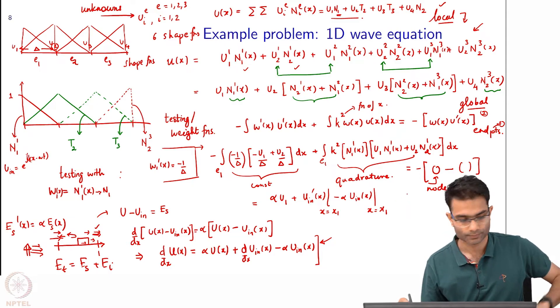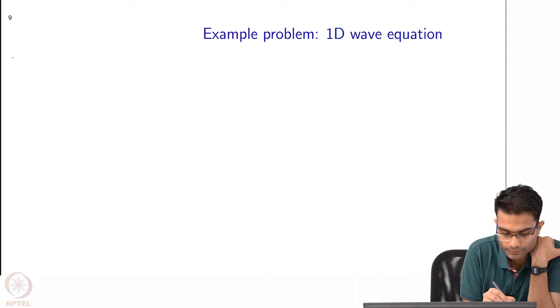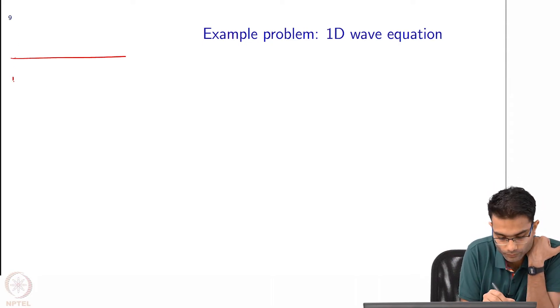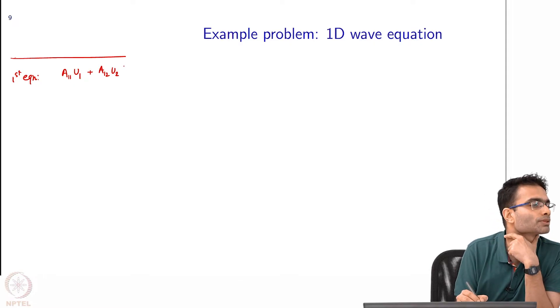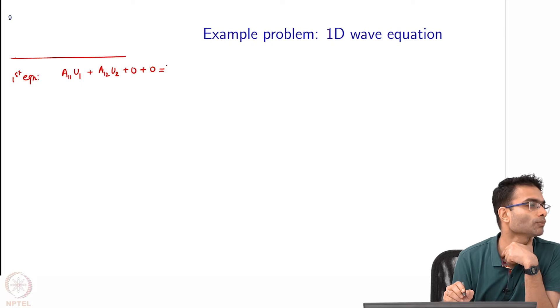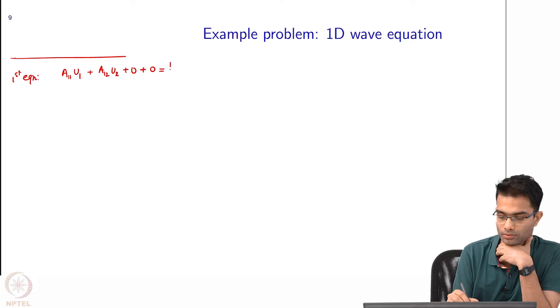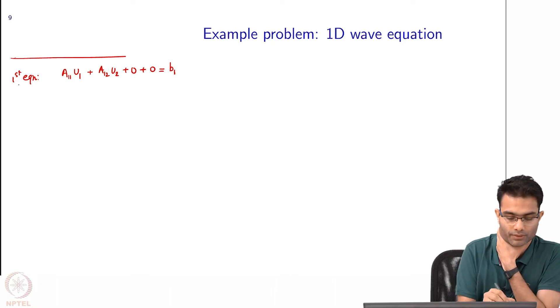I will maybe you can write it over here now. The first equation gave me some term a11 u1 plus a12 u2. Did I have any u3 and u4 terms? No. And did I have a constant term on the right hand side? That is my first equation.